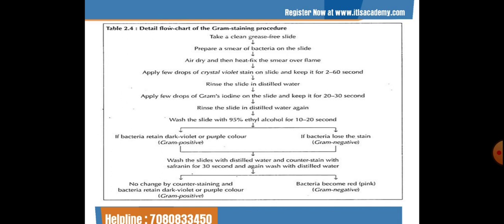Rinse the slide in distilled water, then wash with 95% ethyl alcohol for 10 to 20 seconds. If the bacteria retain a dark violet or purple color, they are gram positive; if the bacteria lose the stain, they are gram negative. Counter stain with safranin for 30 seconds and wash with distilled water. If bacteria retain dark violet or purple, they are gram positive; if the color turns red or pink, they are gram negative.